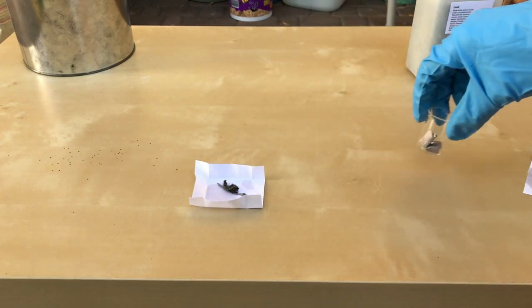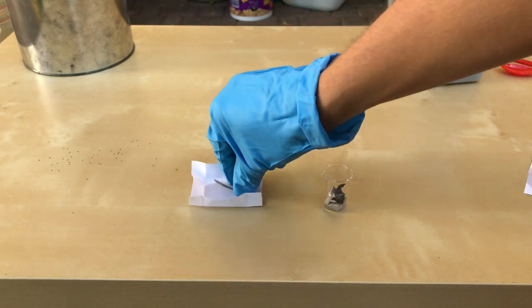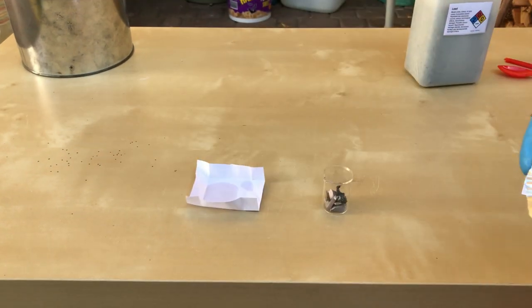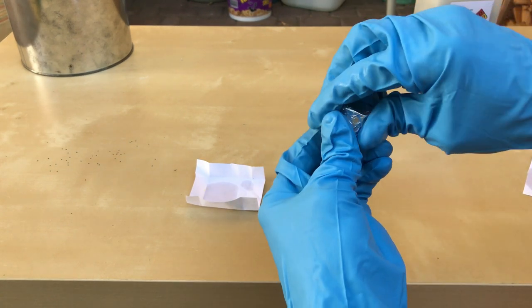The reagents were weighed out in advance and all of the reagents were added to a small beaker. To limit the amount of oxygen entering the beaker, it was covered in aluminum foil.